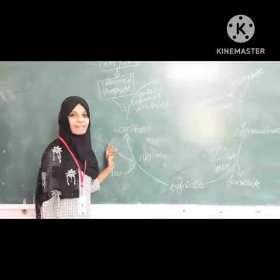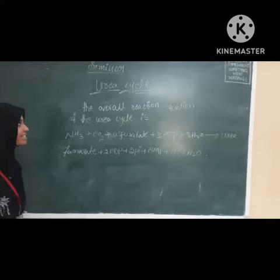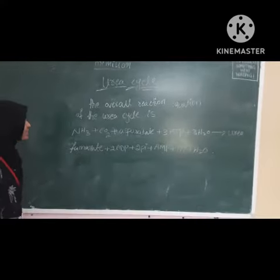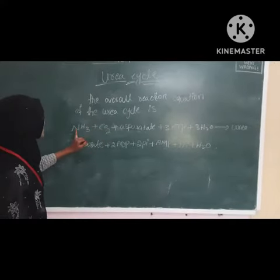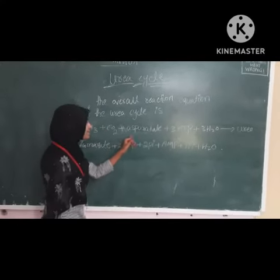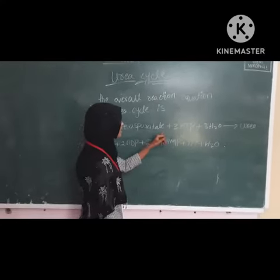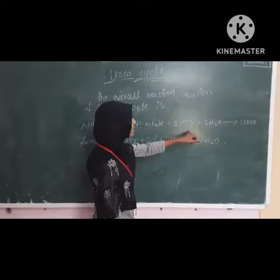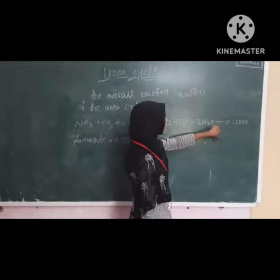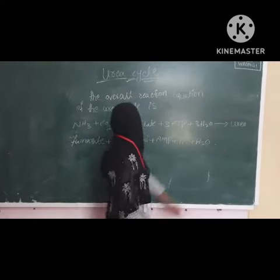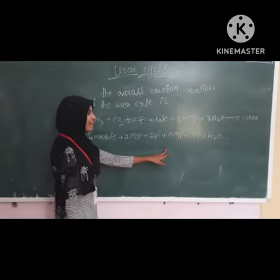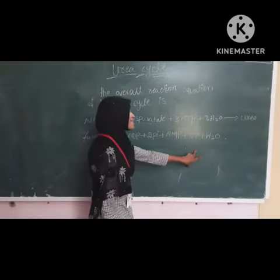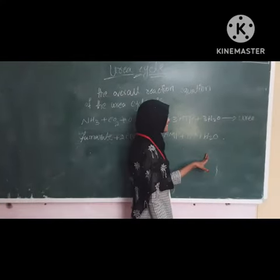The overall reaction equation of the Urea Cycle is: NH3 + CO2 + 3 ATP + 2 H2O → Urea + 2 ADP + UBI + AMP + BBI + H2O.